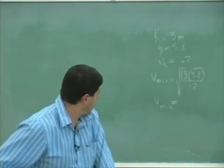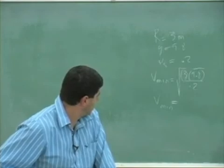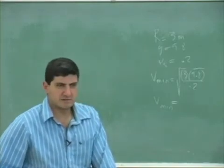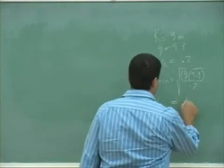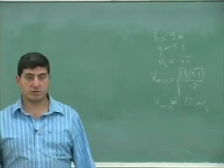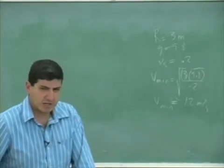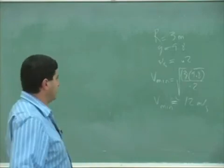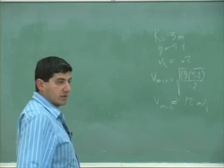V min is going to be like that. Square root of 3 times 9.8 over 0.2. So it's going to be roughly about 12. So about 12 meters per second, which is about 20 miles an hour or something, 20 to 25. So that's going to be that. That's how they do it. That's how they engineer it.